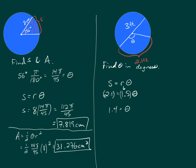When using the formulas s = rθ and the area formula, the angle is always in radians. So to get degrees, convert 1.4 radians by multiplying by 180 degrees over π, placing degrees in the numerator and radians in the denominator so the units cancel. The result is approximately 80.214 degrees.